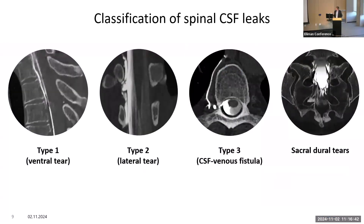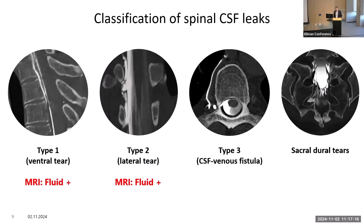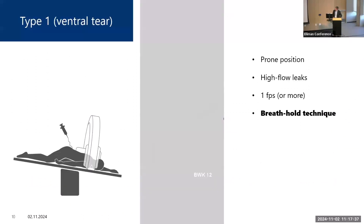Before showing examples, I want to introduce the classification. Type 1 is a ventral dural tear, probably the most common, with epidural fluid on spine MRI. Type 2 is a lateral dural tear, also fluid-positive on spine MRI. Type 3 is a CSF venous fistula — an abnormal connection between the intrathecal space and perivertebral veins, and the only leak type with no epidural fluid. We also regularly find sacral dural tears in approximately five to six percent of patients in Freiburg, and these are fluid-positive.